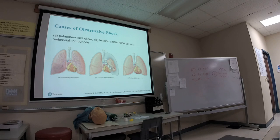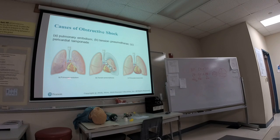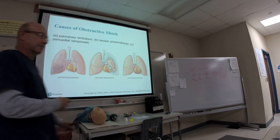A pulmonary embolism causes a V/Q mismatch — a ventilation-to-perfusion mismatch. Air comes in but can't diffuse properly, so there's a mismatch between the amount of air coming in and the amount actually diffusing. A pneumothorax also causes a V/Q mismatch. The pneumo can cause the heart to work harder and possibly an MI; tamponade fills with fluid and prevents contraction.